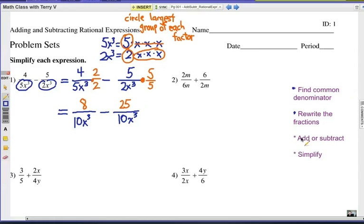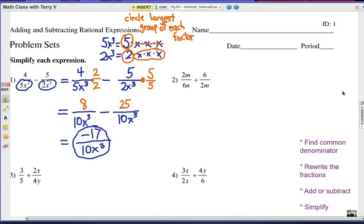Next. So the next step is add or subtract. In this case, 8 minus 25. Now think about your integers. That should be a negative 17 over, remember you just carry your common denominator with you, 10x to the 3rd. There's our final answer. Alright, now you try. I'm going to go a little faster. Remember to do these four steps. Find the common denominator, rewrite the fractions, then do the adding or subtracting, and then simplify when you're done. Good luck.